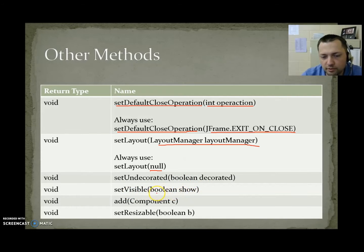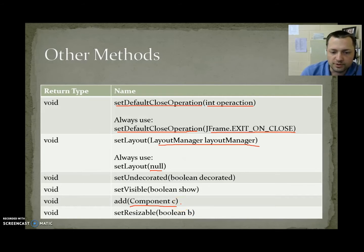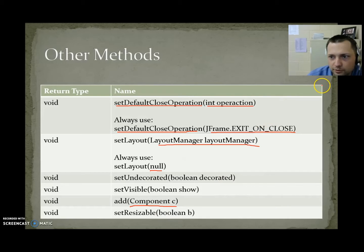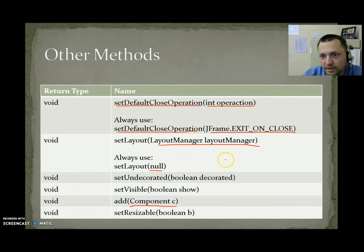setVisible(boolean): when you send true, your window appears on screen; if you send false, it hides the window. addComponent is used for adding items to your window — we'll only be using this to add a single panel to the window. setResizable: we're almost always going to set this to false, because we don't want users resizing the artwork we draw, and games are written to work at a certain size.